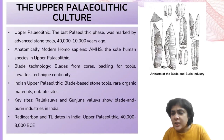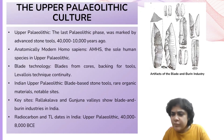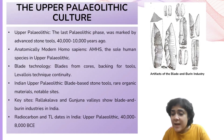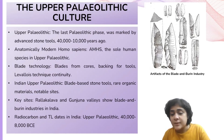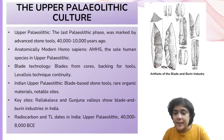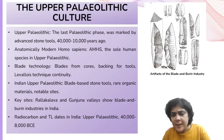Technological advancements during the Upper Paleolithic included the production of parallel-sided blades, refined into various tools by blunting one side or backing them. Blades are elongated, flat, and narrow flakes produced through the prismatic core technique or fluted core technique. Blade production involved removing a series of blades from a single core by striking along the circumference using a punch. These blades were further worked and finished by blunting one side, a process known as backing, resulting in backed blade tools.